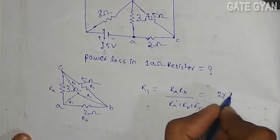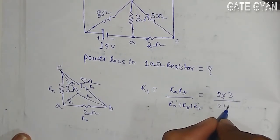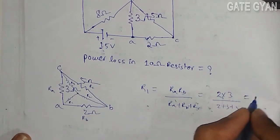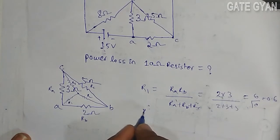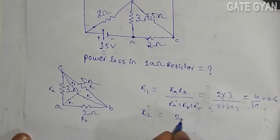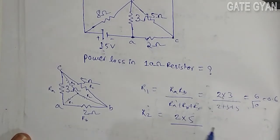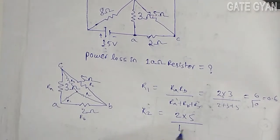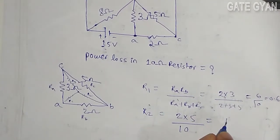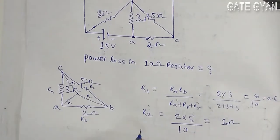So it is going to be 6 by 10, which is 0.6. Similarly, r2 is going to be 2 into 5, 2 into 5 divided by 10, so r2 is going to be 1 ohm.